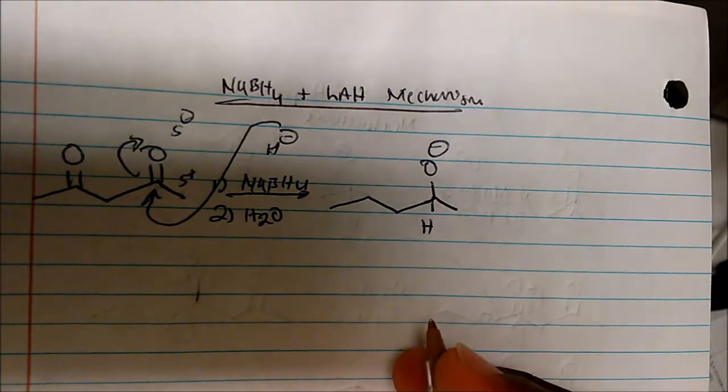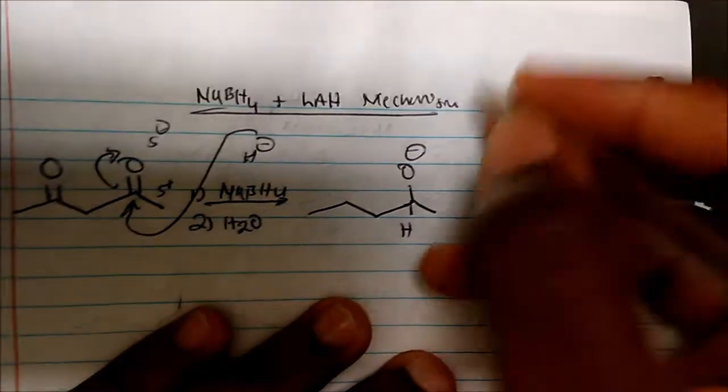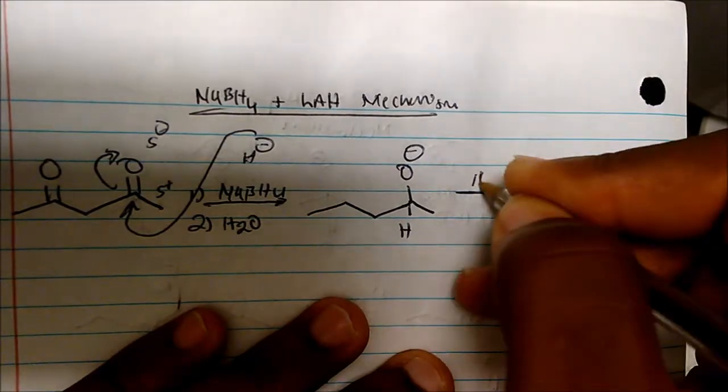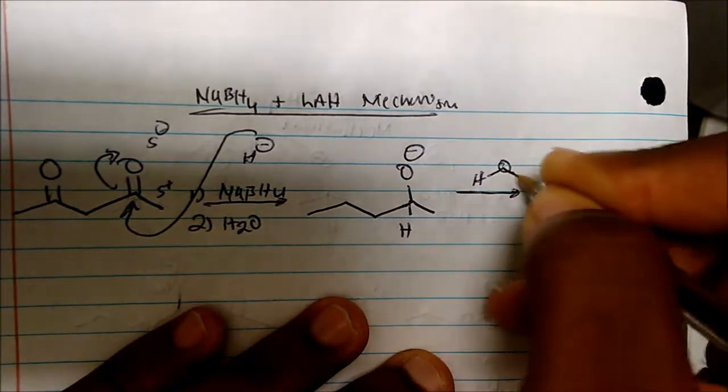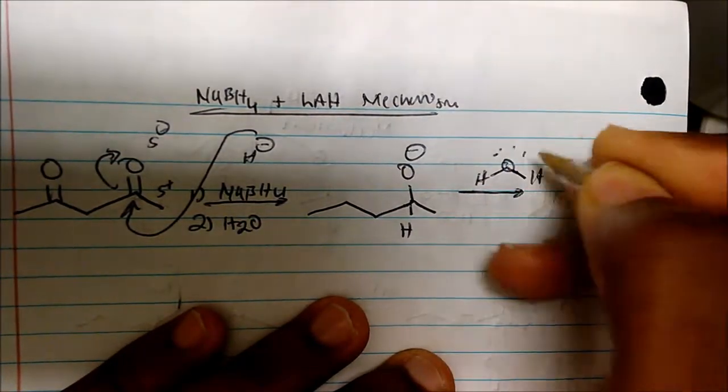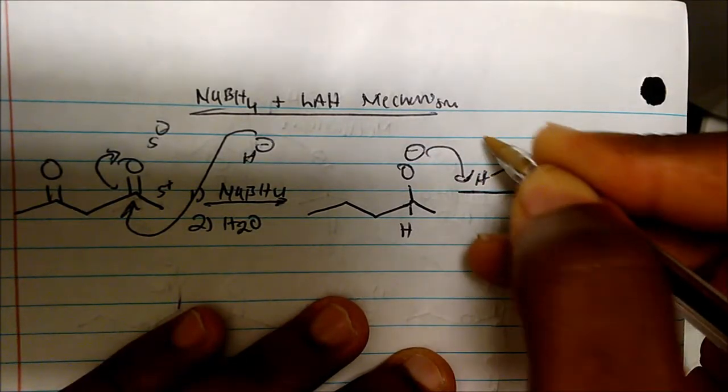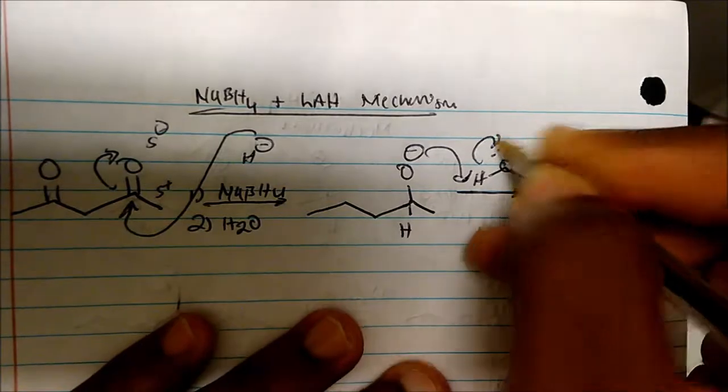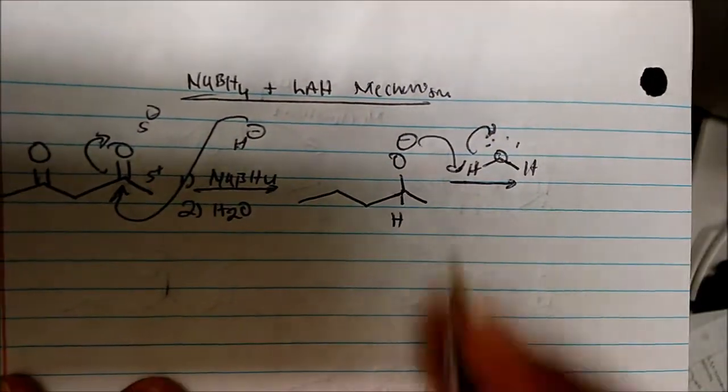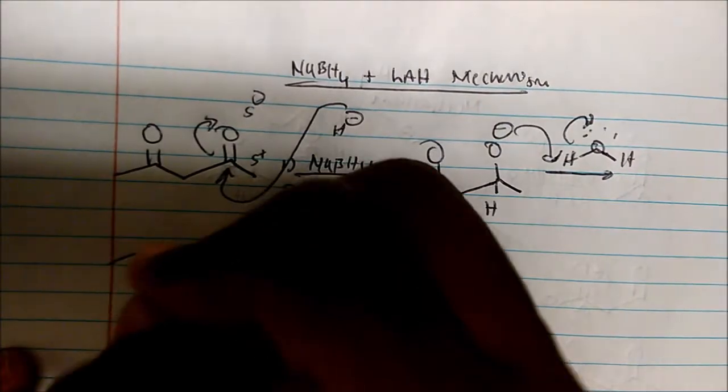In the second step of the mechanism, water comes in and simply acts as a source of protons. This oxygen comes in to take that hydrogen and kicks off the bond on the oxygen. We get something that looks like this - a reduction.